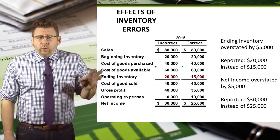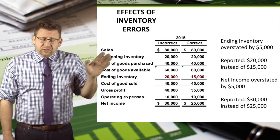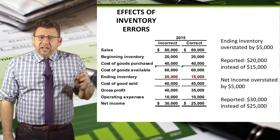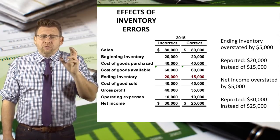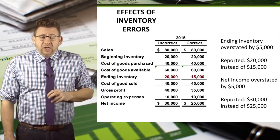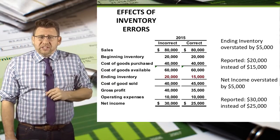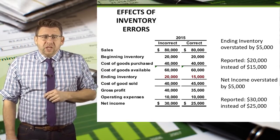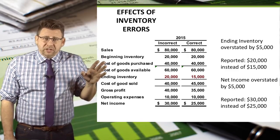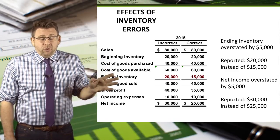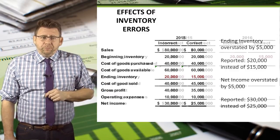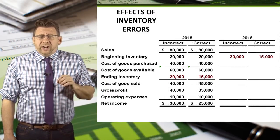In this example we have two years, 2015 and 2016. In 2015, ending inventory is overstated by $5,000 and reported as $20,000 instead of $15,000. This causes net income to be overstated by $5,000 and reported as $30,000 instead of $25,000.